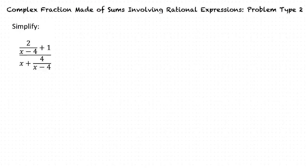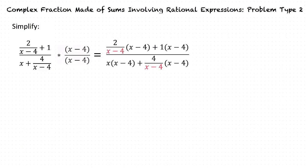Next, we need to multiply the least common denominator into both the numerator and the denominator. After distributing x minus 4 onto both parts of our equations, we can begin to simplify.